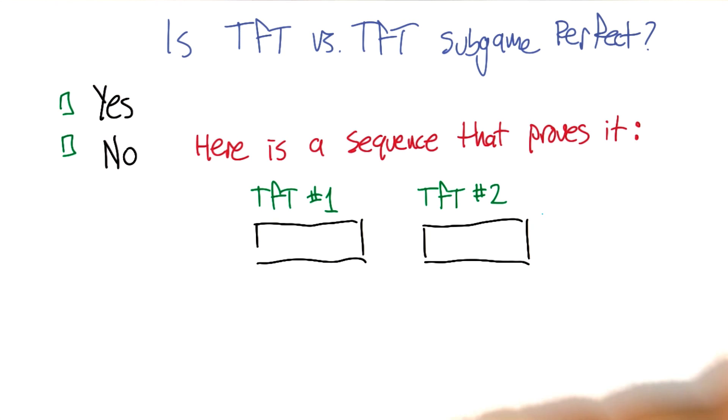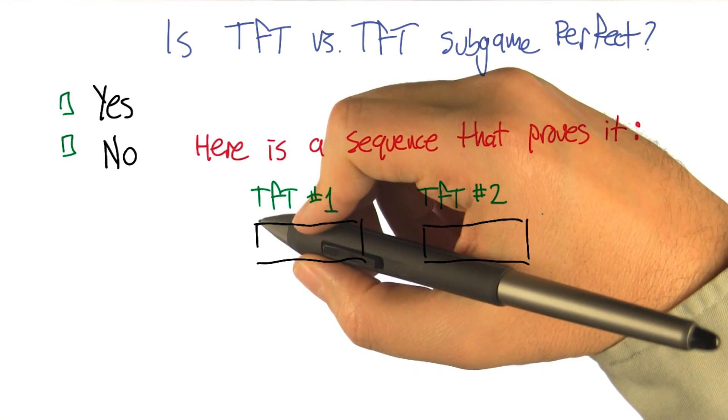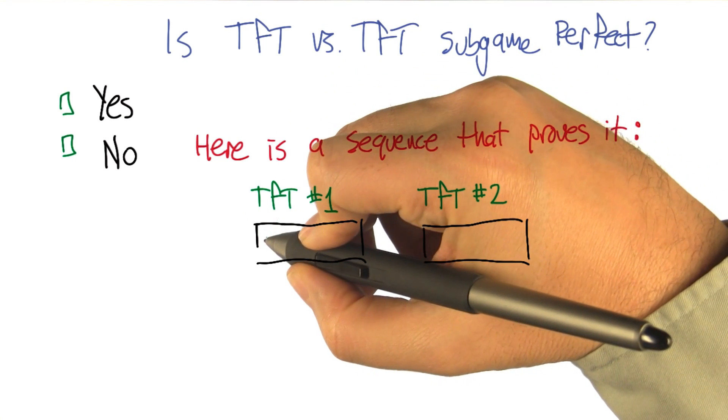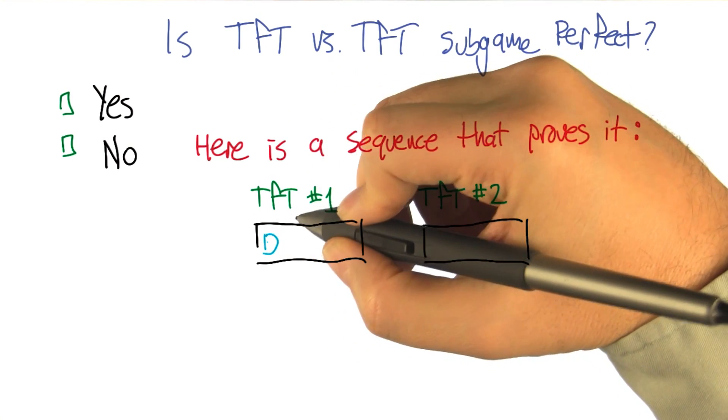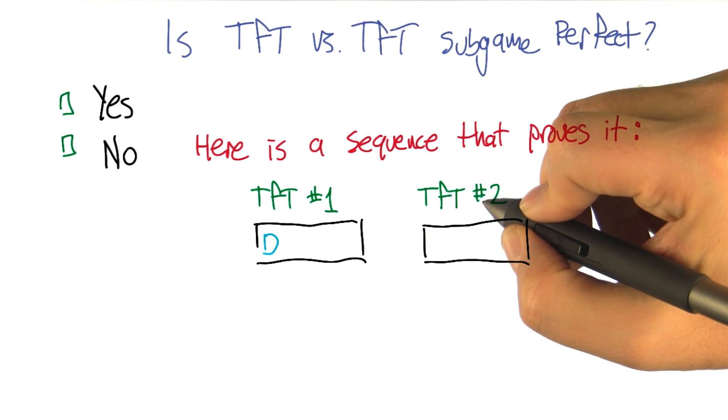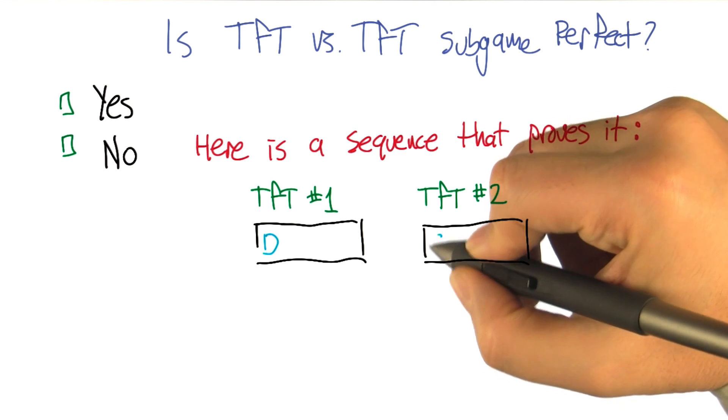So what would happen if, at one point, one of them defected? Okay, just for simplicity, let's make it the very first point. So, tit for tat number one defects, and tit for tat number two also defects? At the very first time, no, it cooperates because it's done at the same time.